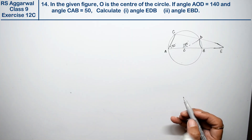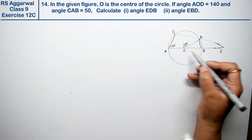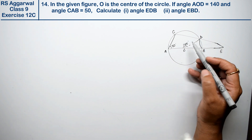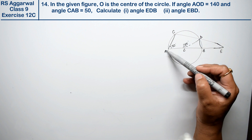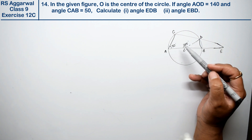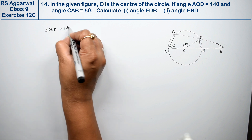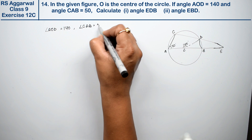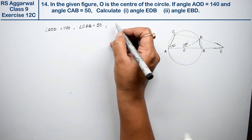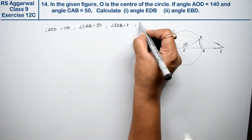Let's do question number 14 of Exercise 12C, that is Circles. O is the center of the circle. Angle AOD is 140 degrees and angle CAB is 50 degrees. We need to find angle EDB and angle EBD.